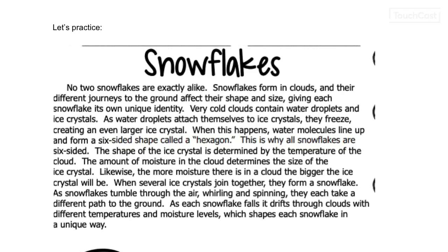As snowflakes tumble through the air, whirling and spinning, they each take a different path to the ground. As each snowflake falls, it drifts through clouds with different temperatures and moisture levels, which shapes each snowflake in a unique way.